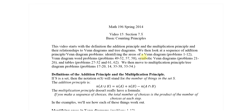The Venn diagram area problems are problems 1 through 12. Venn diagram word problems are 49 through 52, 57, and 58. Symbolic Venn diagram problems are 21 through 26. Tables are problems 27, 32, 61, and 62. The multiplication principle problems are 17 through 20, 14, 35, 38, 53, and 54.